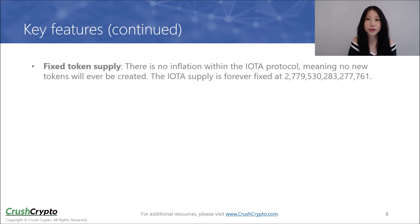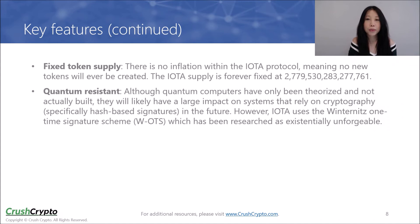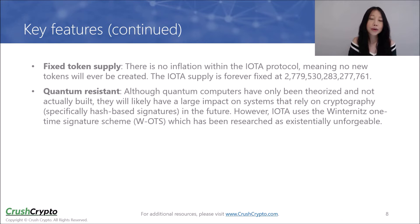IOTA also has a fixed token supply. There is no inflation within the IOTA protocol, which means no new tokens will ever be created. And lastly, IOTA is built to be quantum resistant. Although quantum computers have only been theorized and not actually built yet, they will likely have a large impact on systems that rely on cryptography in the future. However, IOTA uses a unique one-time signature scheme, which has been researched as basically unforgeable.